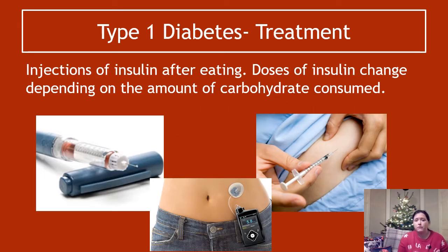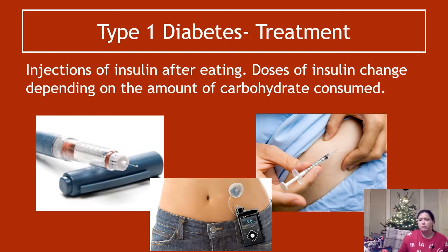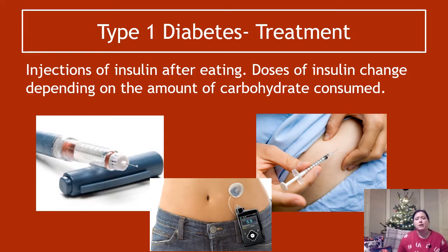Treatment of type one diabetes — and again, this is something you need to know — it's injections of insulin. Remember from National Five how we talked about in genetic engineering that insulin can be produced using genetically engineered bacteria. This is why it was produced — it's for diabetics. They inject insulin depending on how much carbohydrate they have consumed, because carbohydrate will be converted to glucose in the blood. More carbohydrate in your diet, more insulin needs to be taken.